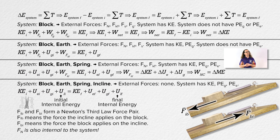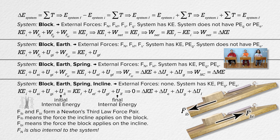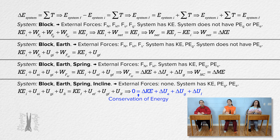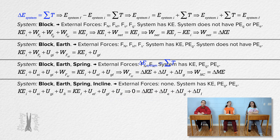If we subtract all the initial energies from both sides, we get that the sum of all those changes in energies equals zero. Does that make sense? Actually, it does — it just means energy is conserved. When you include everything in your system — the block, the Earth, the spring, and the incline — you get conservation of energy because energy is neither created nor destroyed; it just changes forms. This is just a restatement of the equation we started with: the change in energy of the system equals the net energy transferred into or out of the system. But there is no energy transferred into or out of the system because the system contains everything, so the change in energy of the system equals zero.